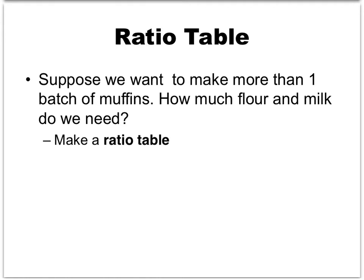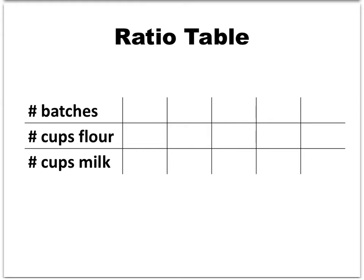Let's play around with this example a little more. Suppose that we want to make more than one batch of muffins — how much flour and milk do we need? Let's look at a tool called a ratio table. In a ratio table, we form a table with three rows: the first row contains the total number of batches, the second is the number of cups of flour, and the third is the cups of milk. To make one batch, we needed 7 cups of flour and 2 cups of milk.